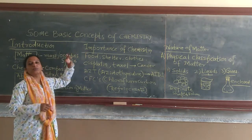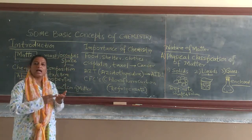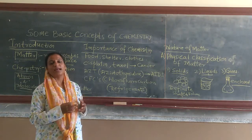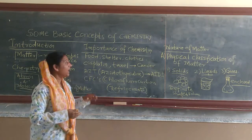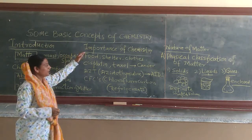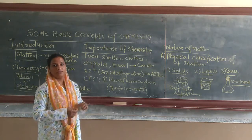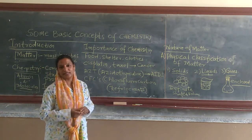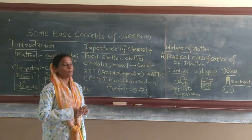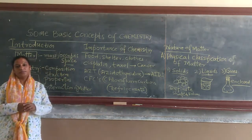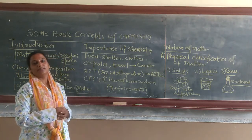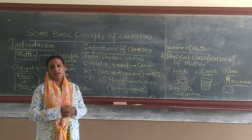Food is consumed in the form of carbohydrates, proteins, oils and fats, vitamins, etc. — all are organic compounds. Coming to shelter, we use iron, we use cement, etc. — all are inorganic compounds. And when it comes to clothing, both natural fibers as well as synthetic fibers are all organic compounds.